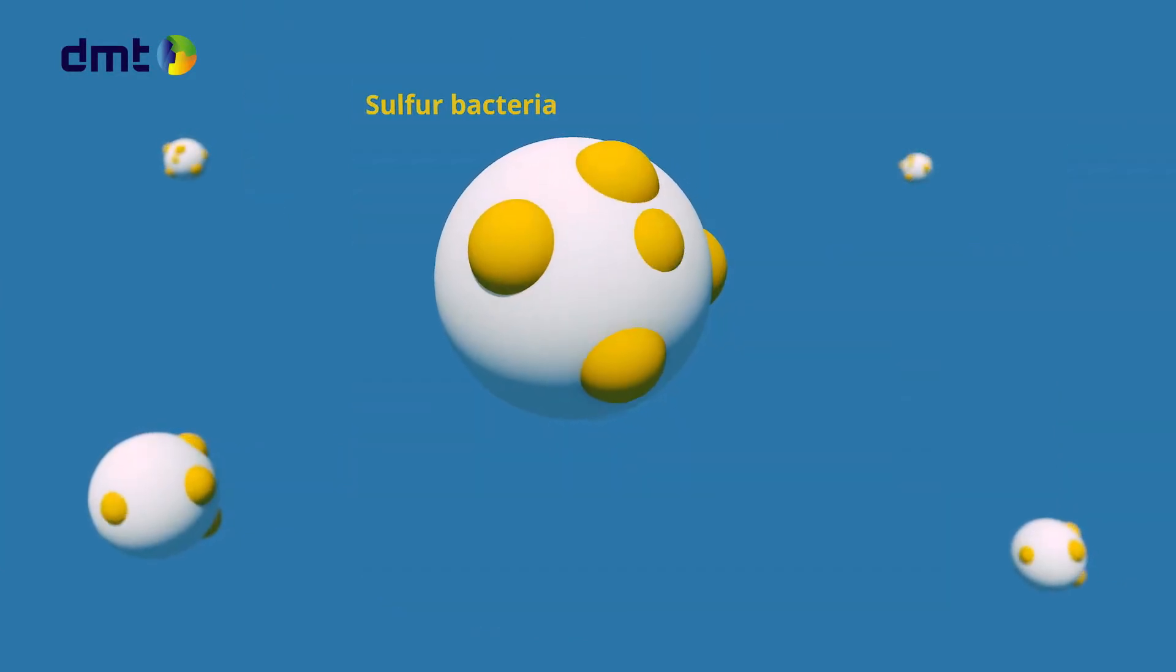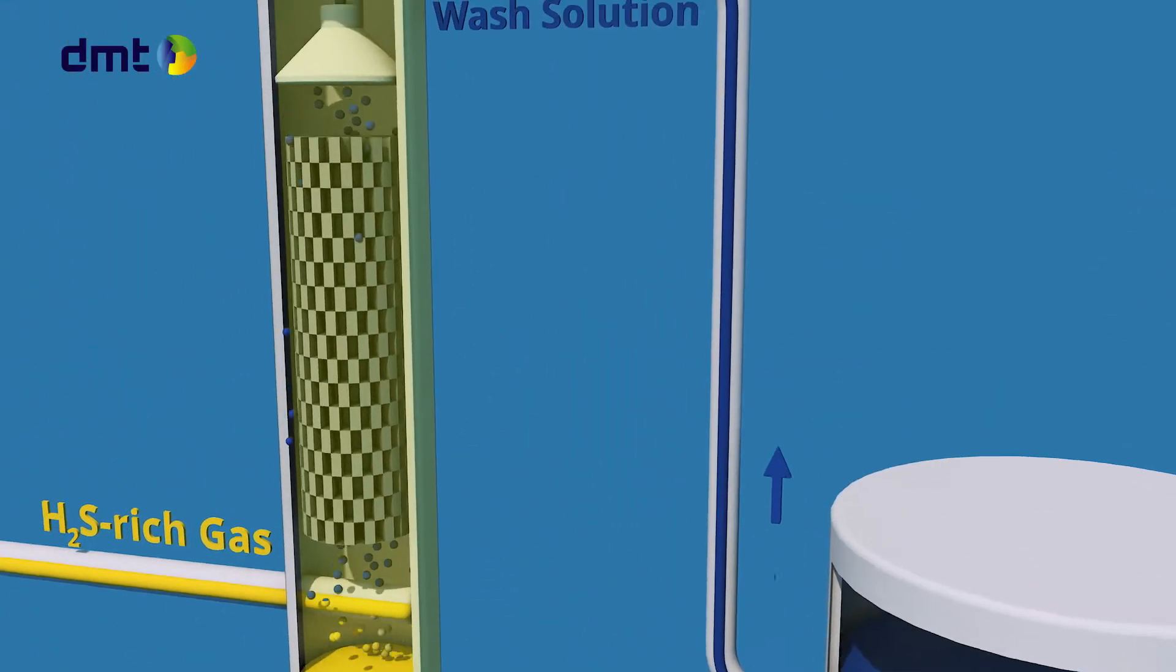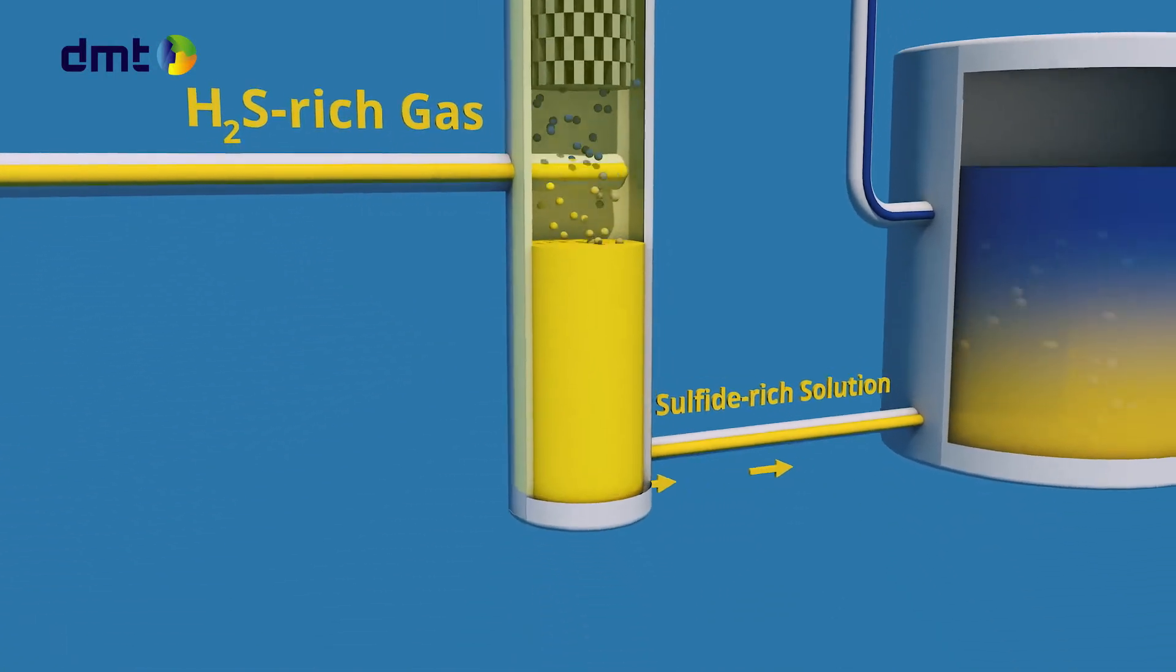Bacteria eat the sulfide present in the liquid and excrete elemental sulfur. The elemental sulfur used is hydrophilic and therefore doesn't cause clogging. The wash solution is regenerated and can be pumped to the absorption section for a new process cycle. This saves a lot of cost for caustic.